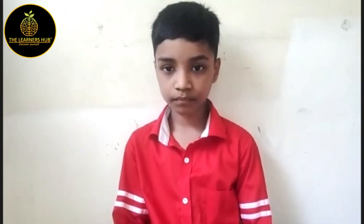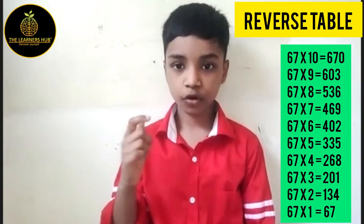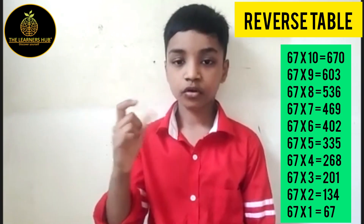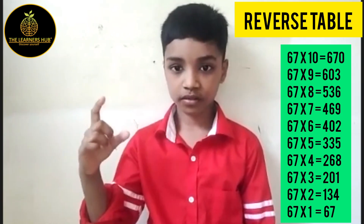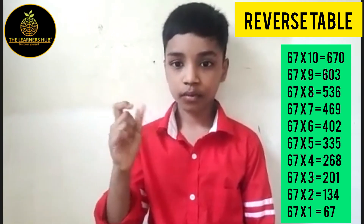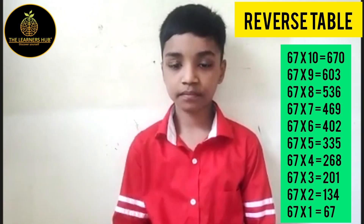Tell me the reverse table of 67. 670, 603, 536, 469, 403, 335, 268, 201, 134, 67.